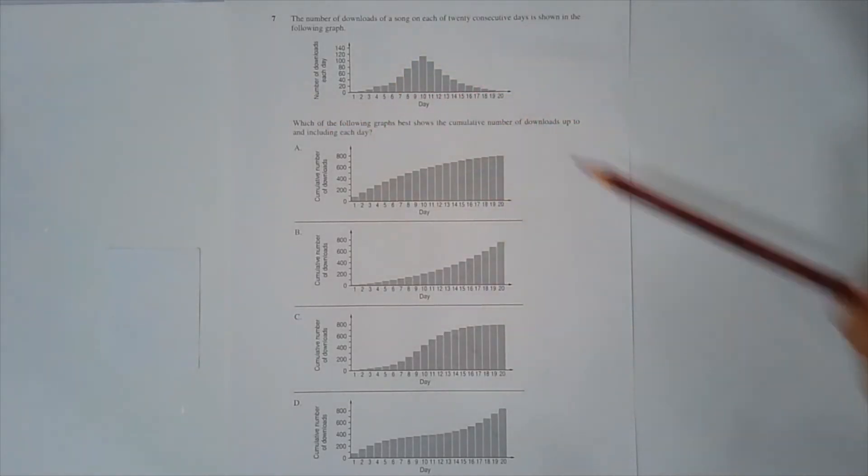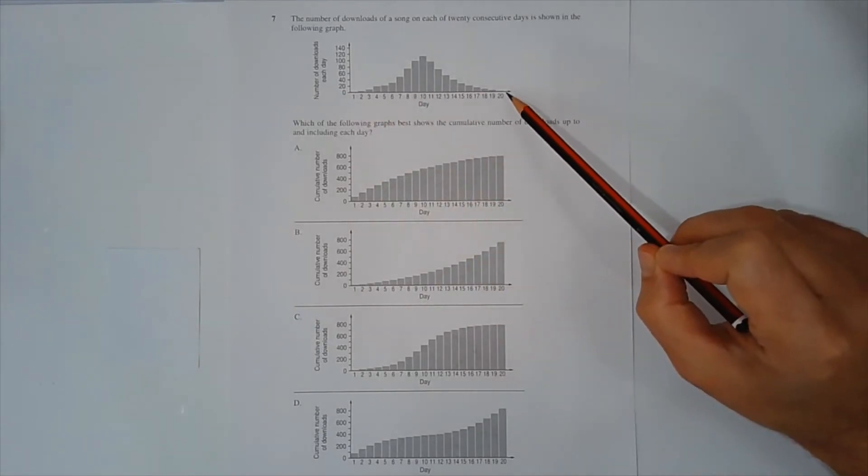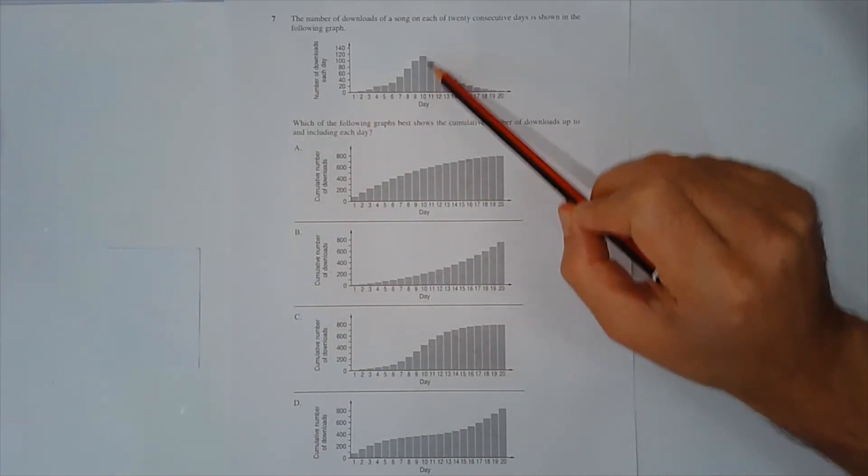Looking at the graph that shows the number of downloads per day, the minimum number of downloads occur at day 1 and day 20, and the maximum number of downloads occur at day 10.